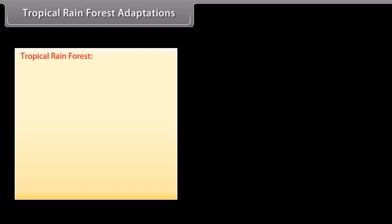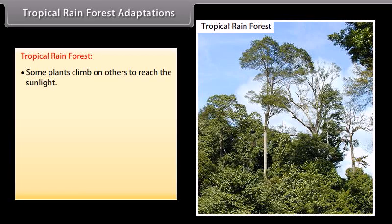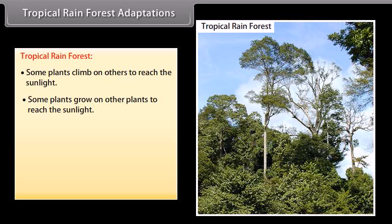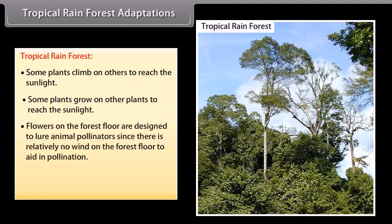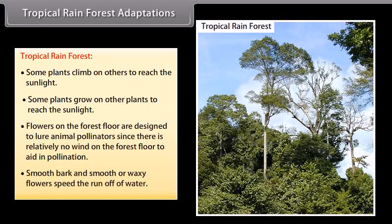Tropical rainforest adaptations: some plants climb on others to reach the sunlight, and some grow on other plants to reach the sunlight. Flowers on the forest floor are designed to lure animal pollinators, since there is relatively no wind on the forest floor to aid in pollination. Smooth bark and smooth or waxy flowers speed the runoff of water.